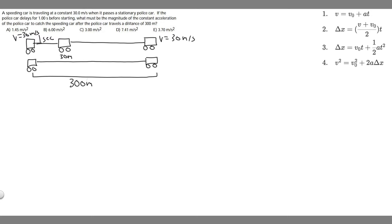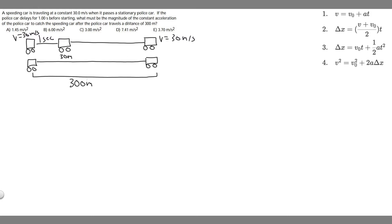What's going to happen is this car is going to travel for one second while the police car has to react. So the speeding car speeds past at 30 meters per second. It takes one second for the police car to recognize it, so how far does the speeding car travel in that time? If it's going 30 meters per second for one second, it goes 30 meters. So basically the speeding car is going to be 30 meters ahead of the police car at the beginning point. Then the police car is going to travel 300 meters and catch up to the speeding car, so they're going to be at the same point.